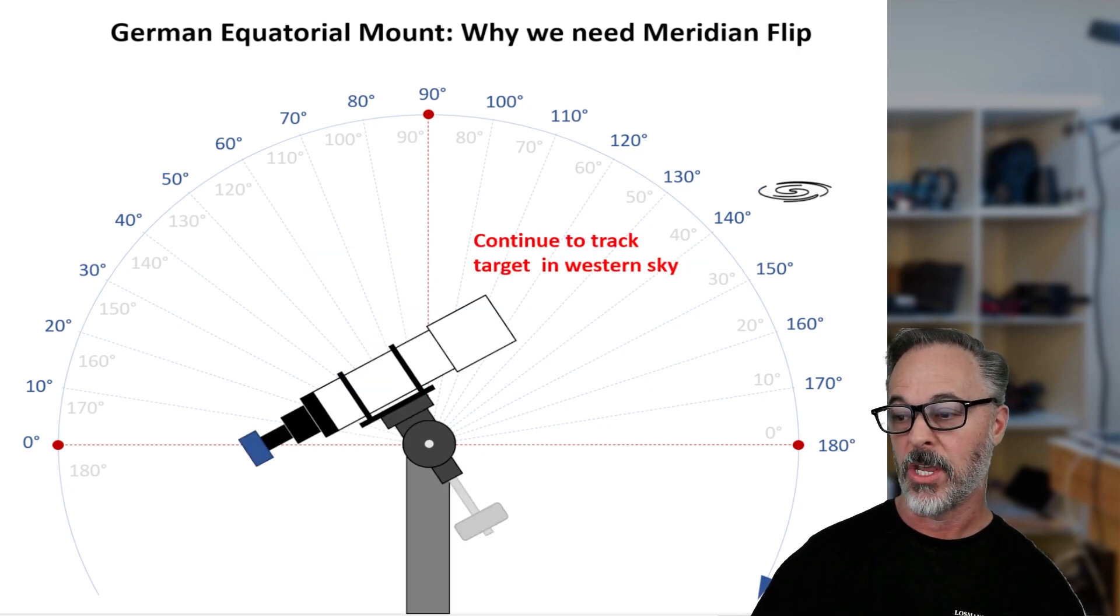And when it does this, then we can, of course, continue on to track that target into the Western sky for as long as we like. And that is the meridian flip.